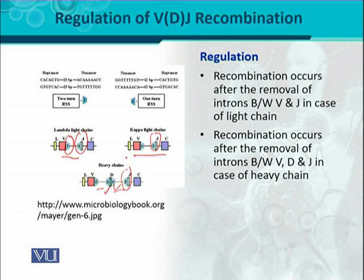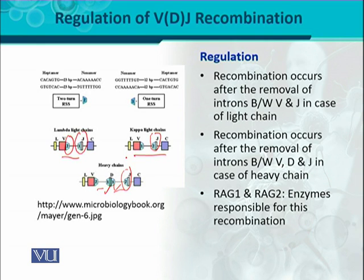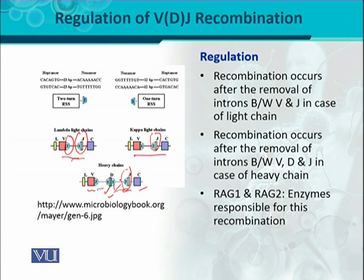The role of these signal sequences is very important — they signal which V binds with J, which V binds with D, and how V, D, and J join together. In addition, certain enzymes are also responsible, called RAG1 and RAG2 — RAG stands for Recombination Activating Genes. These enzymes bind at the signal sequences and cause the removal of introns, so that exons V, D, J, and C come together.